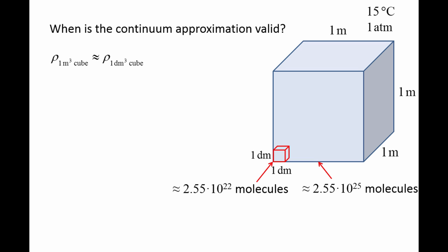Since both the mass and volume are reduced by approximately a factor of 1,000 in the smaller cube, the density of the larger cube would be approximately the density of the smaller cube. At 15 degrees Celsius and 1 atmosphere of pressure, both the larger and smaller cubes would have a density of approximately 1.23 kilograms per cubic meter.